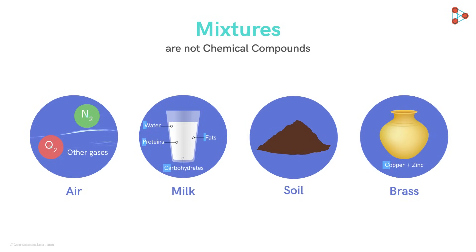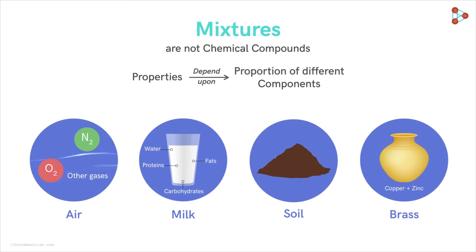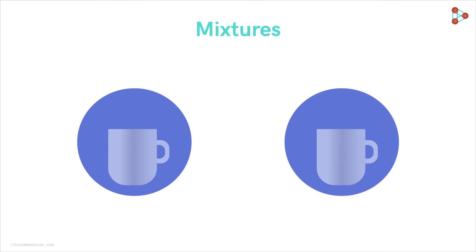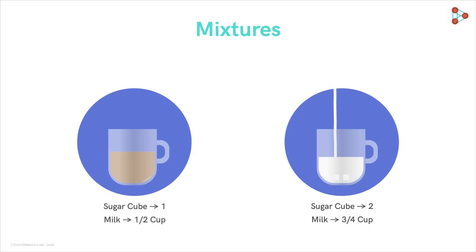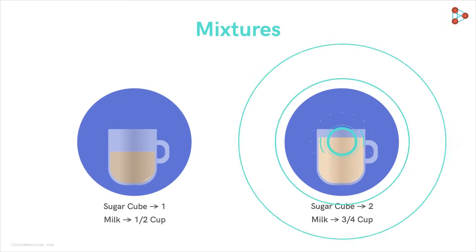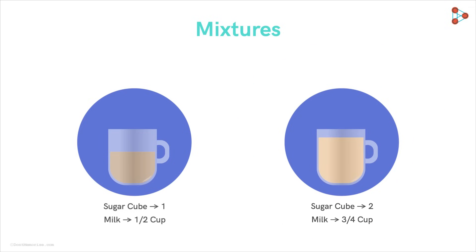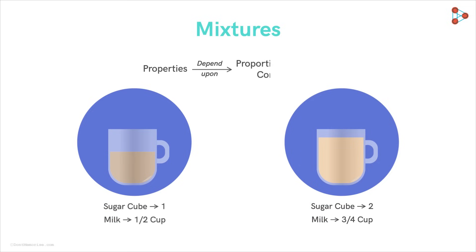In all these examples, the different components in the mixture are not chemically combined — they do not chemically react with each other to form compounds. One interesting characteristic of a mixture is that its properties depend on the proportion of its components. To understand this, let's make two cups of tea: one with one sugar cube and half a cup of milk, the other with two sugar cubes and three-fourth cup of milk. The second cup will be lighter in color and taste sweeter. So the properties of a mixture depend on its composition.